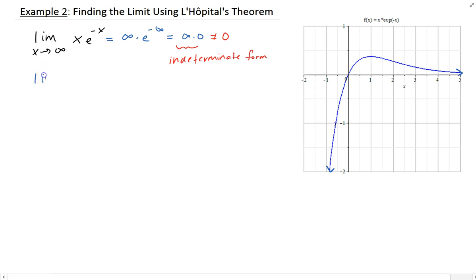We can rewrite this in fractional form. We have x, and we can put e to the minus x in the denominator, so it becomes e to the x. To use L'Hôpital's theorem, we must ensure the function is in fractional form, which is x over e to the x.